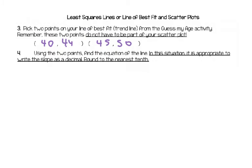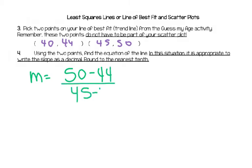I looked at my graph and chose two points. Your points are very likely going to be different — we're doing the same work but with different numbers. Take your points and find your equation of the line of best fit using point-slope formula; it probably won't be the same as mine. My slope comes out to be 6 over 5, and I'm going to change that into a decimal: 1.2. Yours might be different.